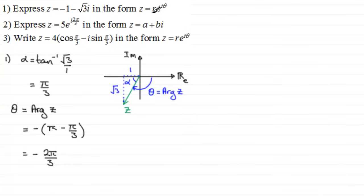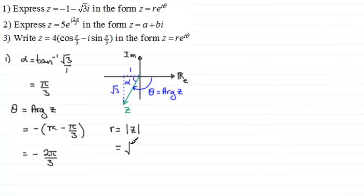We just need r. r equals the modulus of z, and to get the modulus it's Pythagoras's theorem — the root of the sum of the squares of the two sides. So it's root of (root three)² plus 1², which is root of 3 plus 1, that's root of 4, which equals 2.